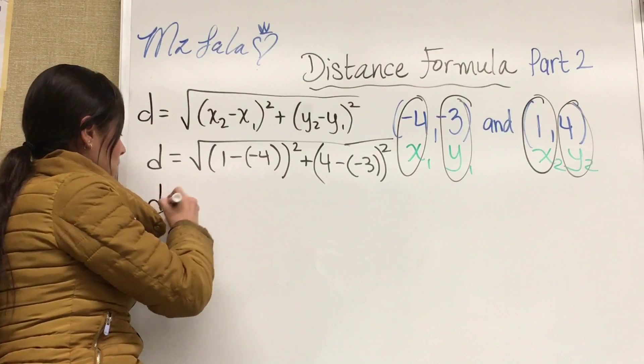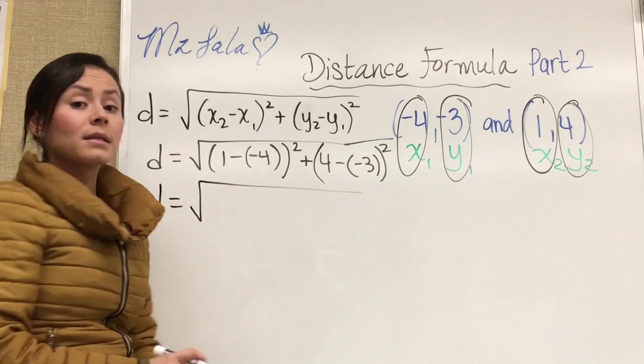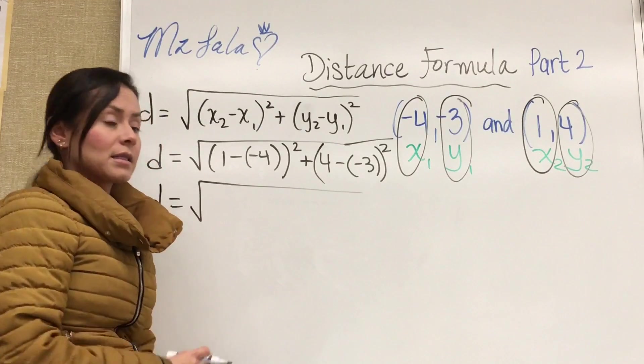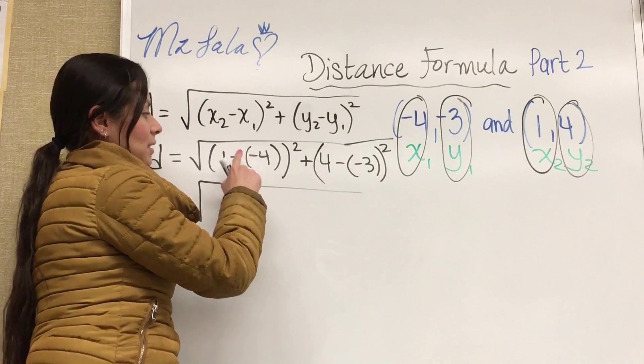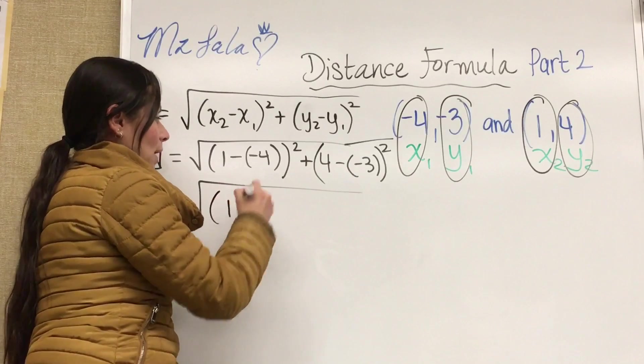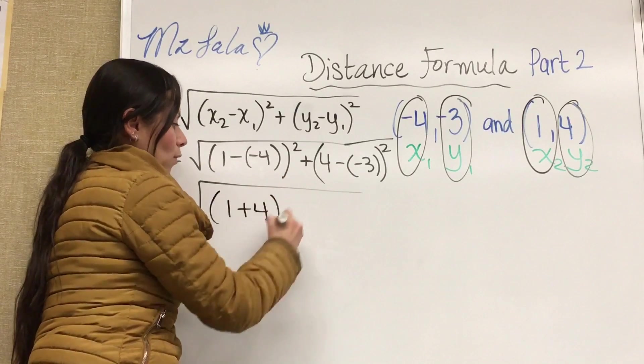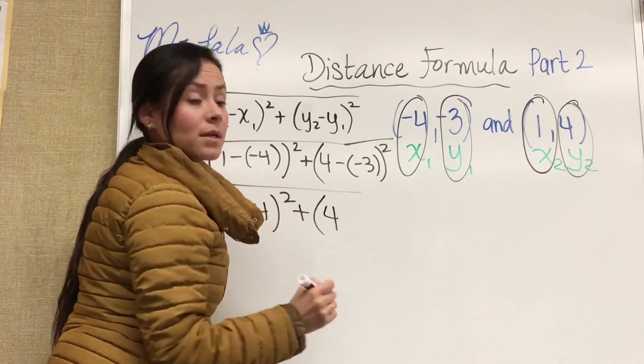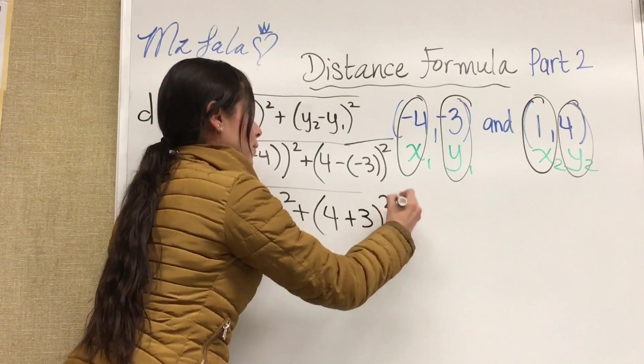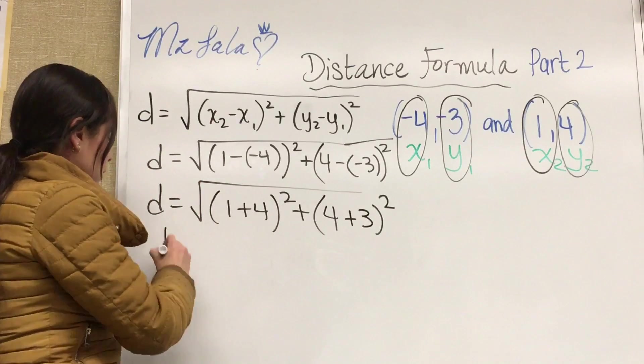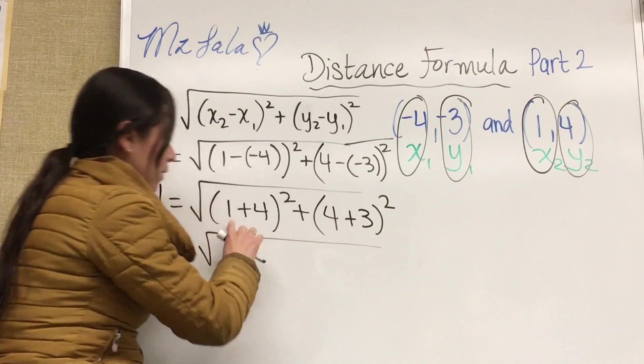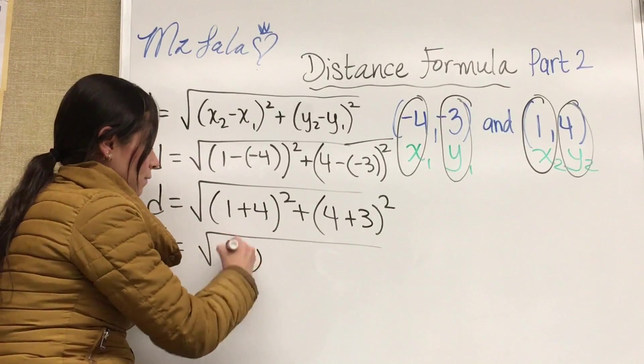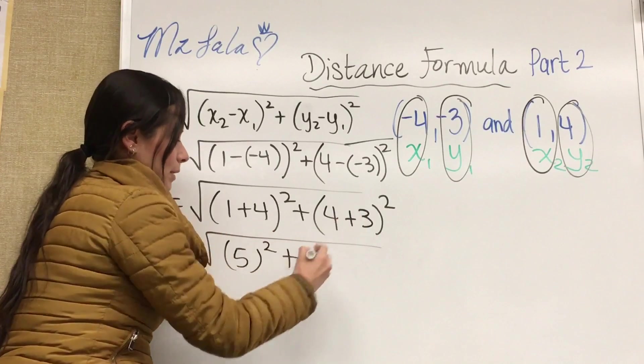So now if we simplify this, I've done this in other lessons several times where we say that this is the opposite of negative 4. So that really means positive 4, right? And then we have again the opposite of negative 3 which that would be positive 3. So now we would simplify that and we have 1 plus 4 is 5 squared plus 4 plus 3.